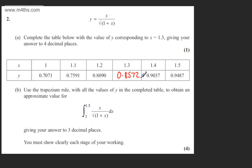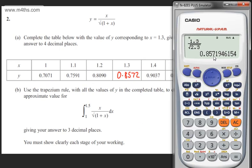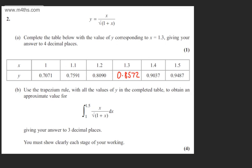So one mark for part A. In part B, it says use the Trapezian rule with all the values of y in the completed table to obtain an approximate value for the integral from 1 to 1.5 of x over the square root of 1 plus x, with respect to x, giving our answer to three decimal places. We must show clearly each stage of our working. The question carries four marks.